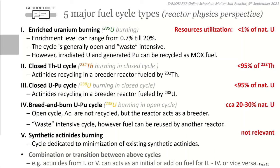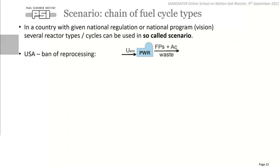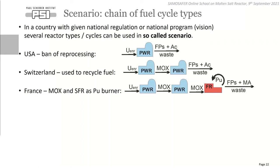The second cycle is the closed thorium-uranium cycle, burning thorium-232 in closed cycle with resource utilization up to 95% of thorium due to reprocessing losses. Similarly, there is the closed uranium-plutonium cycle burning uranium-238 in closed cycle with roughly 95% utilization. Then there is the breed-and-burn uranium-plutonium cycle — uranium-238 burning in open cycle — waste intensive, but with fuel reusable in another reactor; utilization ranges from 20% to 30% of natural uranium. The last cycle is dedicated synthetic actinide burning, where utilization is not the main metric. Of course you can combine these cycles, but those are the five basic types.